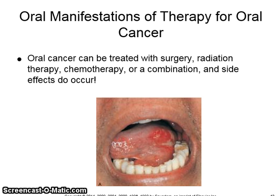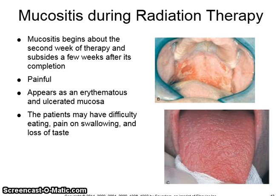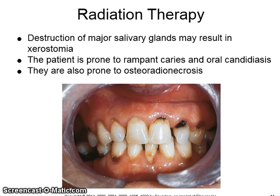Oral manifestations of therapy for oral cancer: oral cancer can be treated with surgery, radiation, chemotherapy, or a combination, and side effects do occur. Mucositis begins about the second week of therapy and subsides a few weeks after completion. It is painful and appears as an erythematous and ulcerated mucosa. Patients may have difficulty eating, pain on swallowing, and loss of taste sensation. During radiation therapy, destruction of major salivary glands can occur and result in xerostomia. These patients are more prone to rampant caries, oral candidiasis, and osteoradionecrosis.